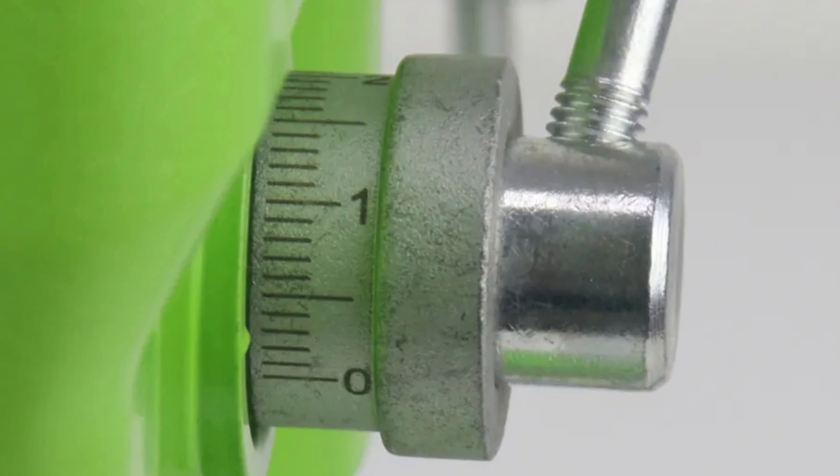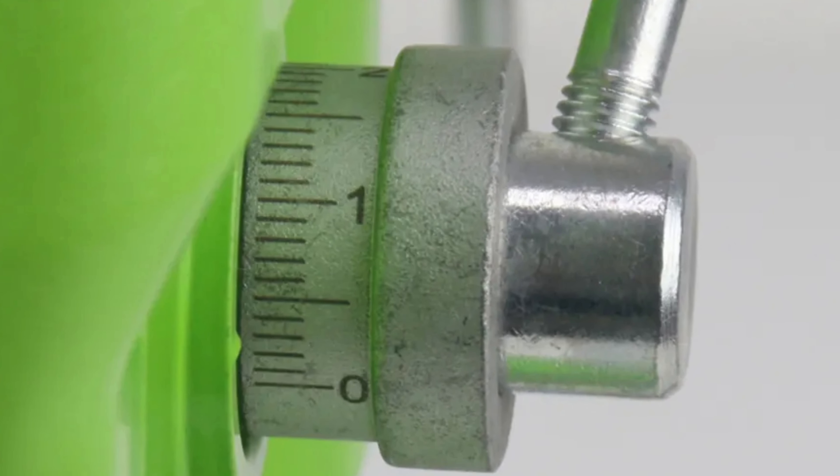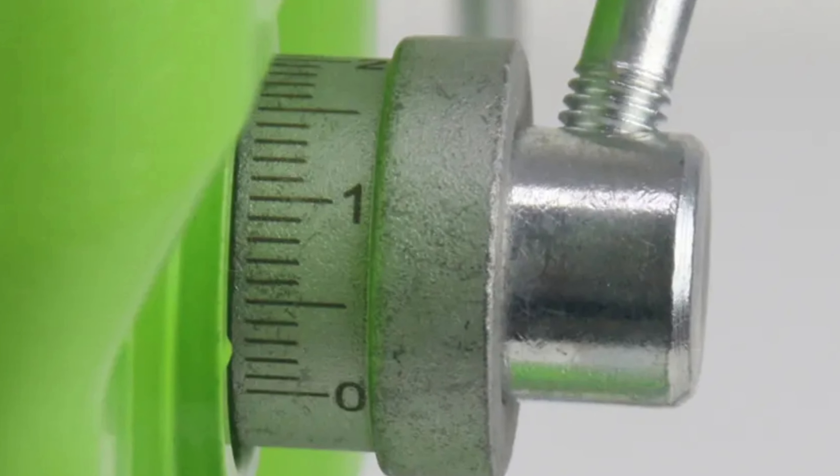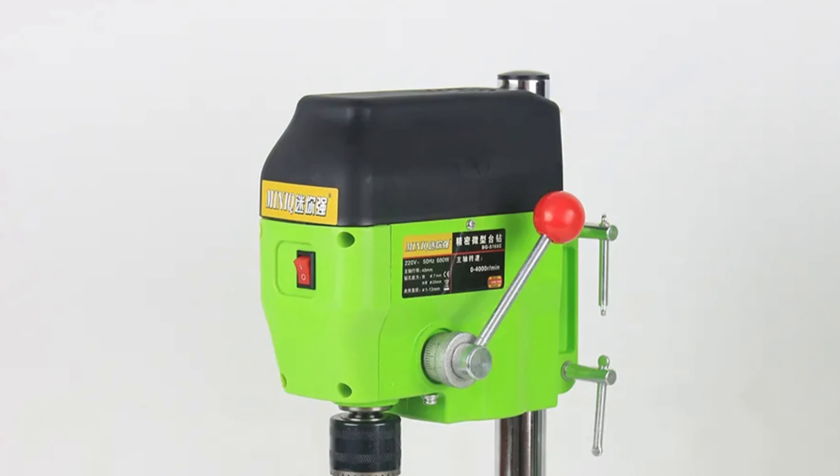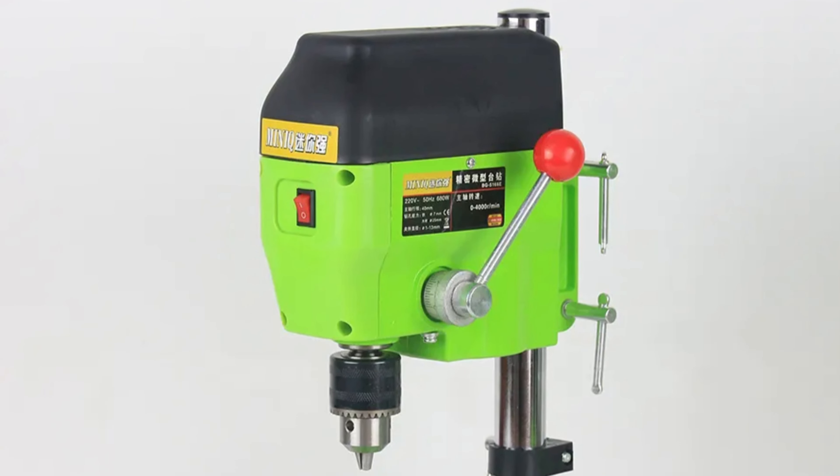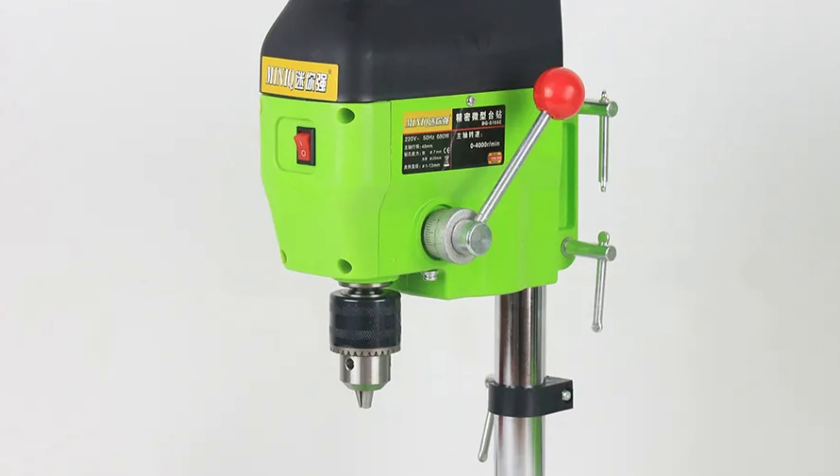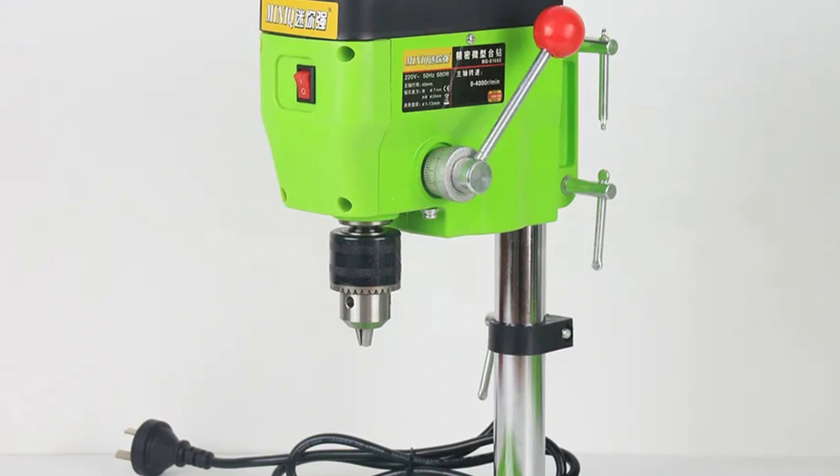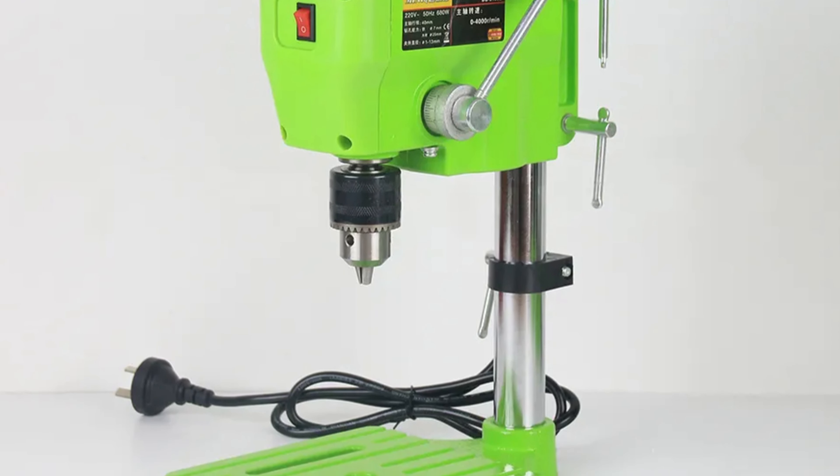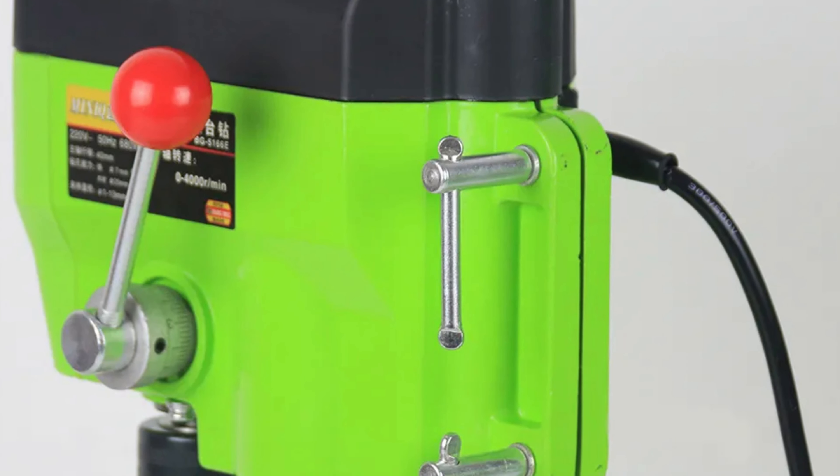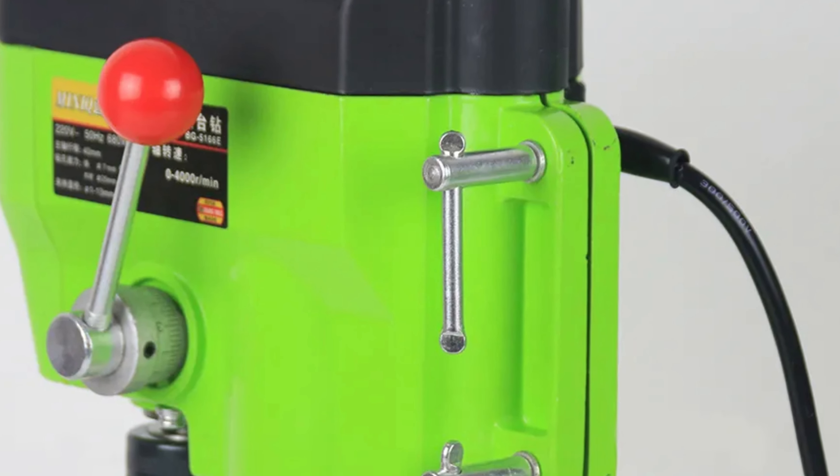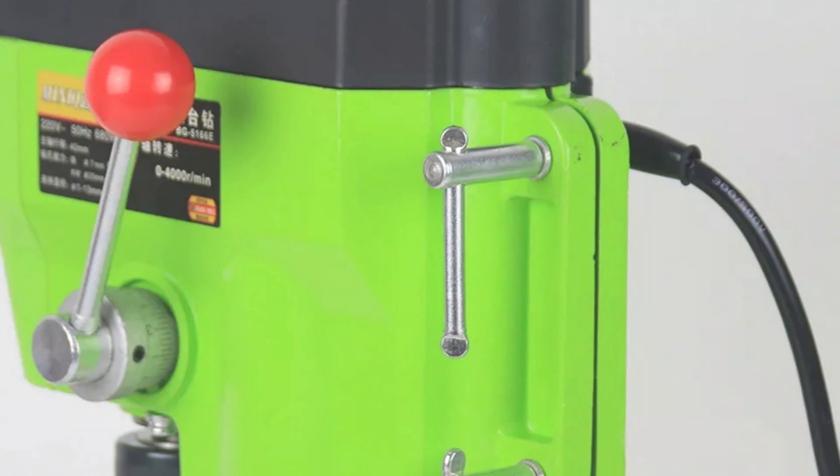The drill is customizable and user-friendly, allowing users to adjust the drill according to their specific needs. It weighs just 5.7 kg, making it easy to transport and maneuver. The XMSJ-5166A has an impressive no-load speed of 11,000 rpm, ensuring efficient and swift drilling. Its maximum drilling diameter is 25 mm, allowing users to work on a wide range of materials and project sizes.